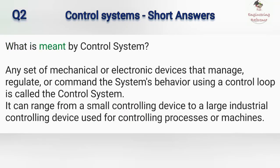What is meant by control system? Any set of mechanical or electronic devices that manage, regulate, or command the system's behavior using a control loop is called the control system. It can range from a small controlling device to a large industrial controlling device used for controlling processes or machines.